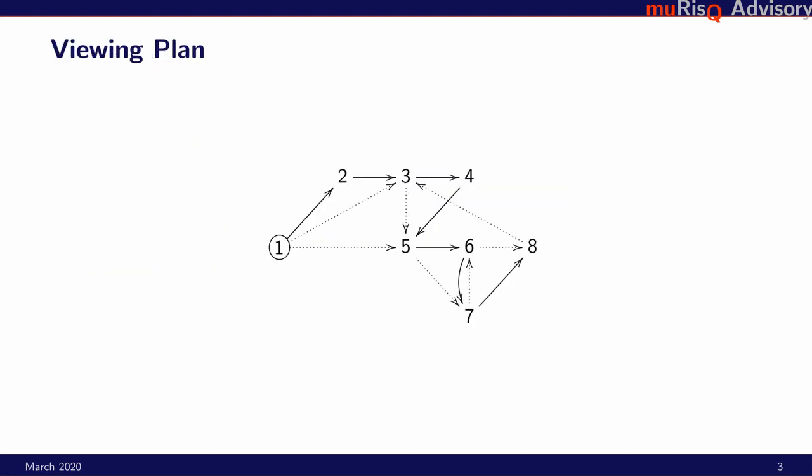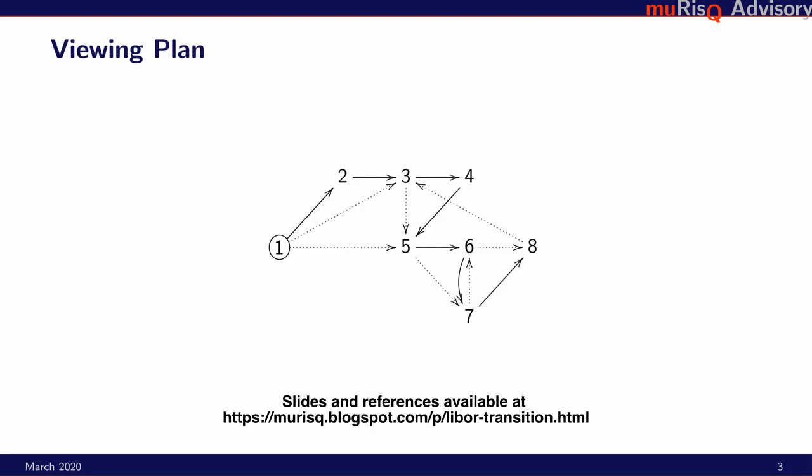After two introductory sections, there will be two sections on the overnight transition and four sections on the Eichborg fallback. The best viewing plan is to watch the videos in order. Alternative orders for the sections are displayed on the screen with dotted lines. You can skip the introduction, watch only the overnight part, or watch only the Eichborg part. You can even watch them in random order. This will be a better replication of the feeling most market participants have dealing with the daily flow of information over the last two years.